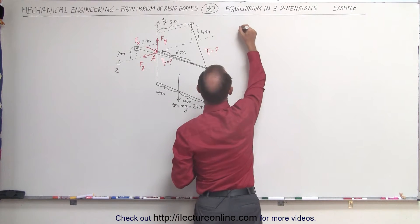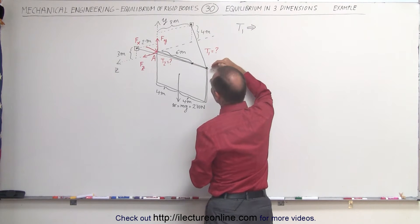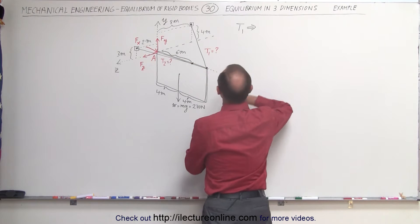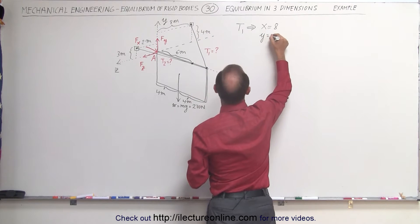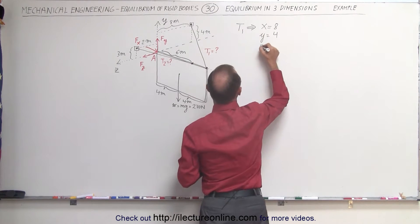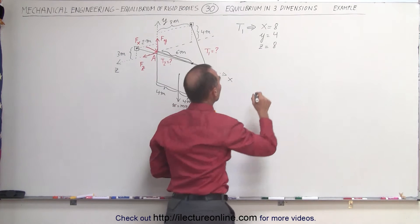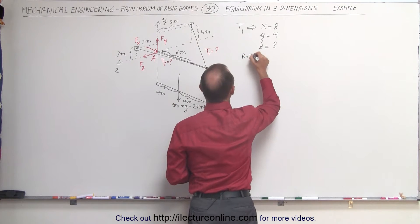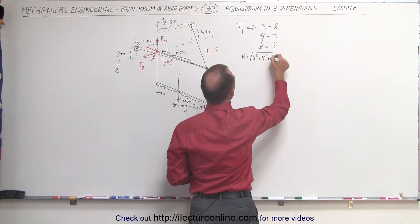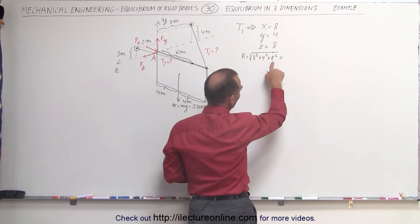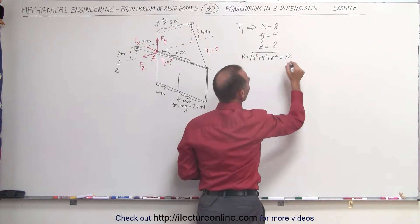Let's start with cable one. For tension one, we figure out the length of the cable in the x, y, and z directions. In the x direction it's eight meters, in the y direction it's four meters, and in the z direction it's eight meters. To find the length of the cable, we take the square root of eight squared plus four squared plus eight squared: 64 plus 16 plus 64 equals 144, and the square root of 144 is 12.